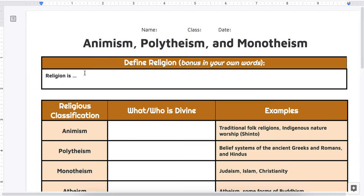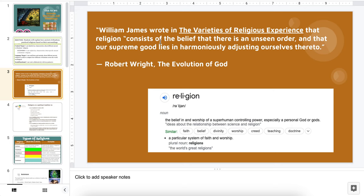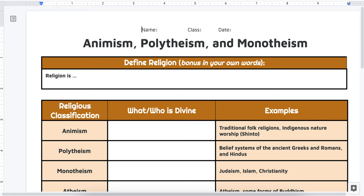Right here, it asks you to define religion — and as a bonus, if you can do it in your own words. William James wrote that religion consists of the belief that there is an unseen order and that our supreme good lies in harmoniously adjusting ourselves thereto. Google defines religion as the belief in and worship of a superhuman controlling power, especially a personal god or gods, with words like faith, belief, and divinity as similar words. Pause the video and make sure that you have identified what religion is using this sentence starter.